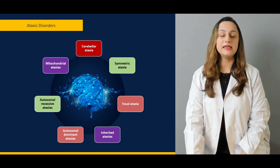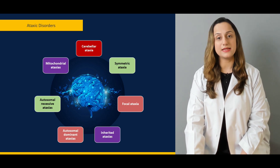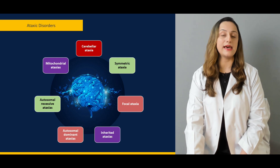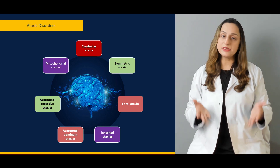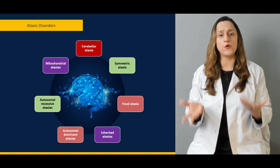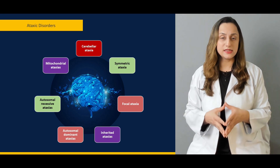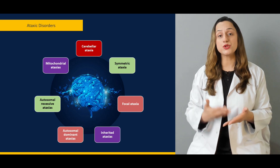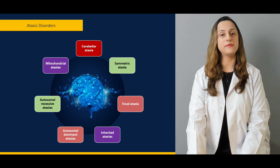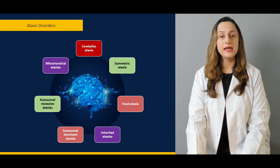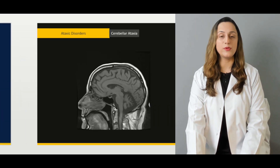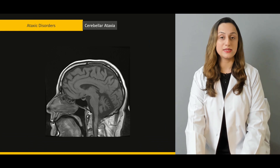We have subgroups or subclassifications for ataxic disorders: cerebellar disorders can be one of the causative factors. Then we have symmetric, focal, and inherited ataxias — it can be an autosomal dominant or recessive variety, or even a mitochondrial ataxia. We must know how to diagnose these cases and we'll go through them one by one in this particular lecture.